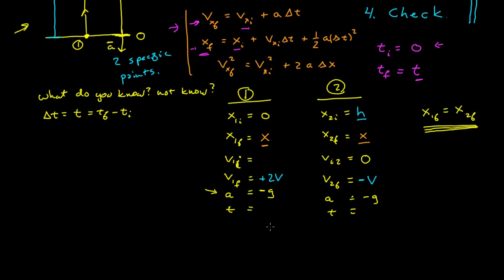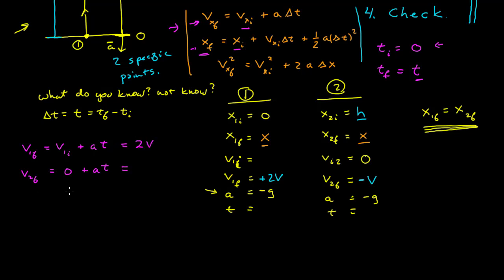I have a lot of things I know and don't know. I know these equations apply, so I'll start using them to establish relationships. For the first equation — final velocity equals initial velocity plus acceleration times time — for particle 1: 2v equals v sub 1i plus a times t. For particle 2: negative v equals 0 plus a times t. I also want position equations. The final position of particle 1, which is x, equals its initial position 0, plus its initial velocity times t, plus one-half a t squared.